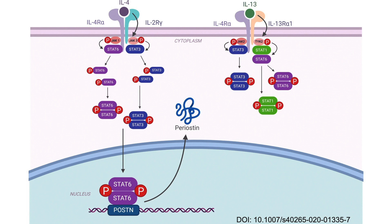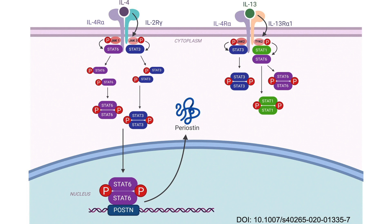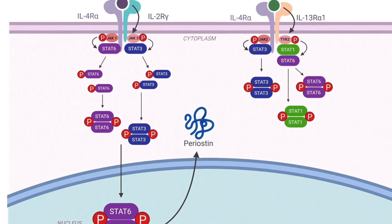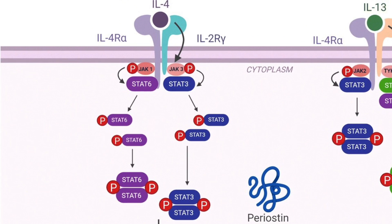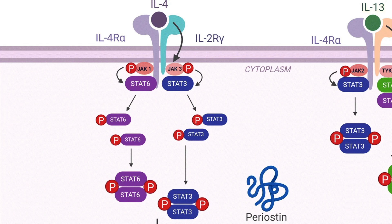The JAK-STAT pathway begins with the activation of a membrane-bound cytokine receptor by interferon or another cytokine. Cytokines, like interleukin-4 or interleukin-13, are small proteins that cannot cross the lipid bilayer of cells to enter the cytoplasm and therefore typically exert their functions by interacting with specific cytokine receptors on the target cell surface.